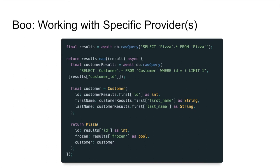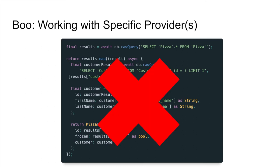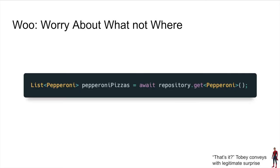Another thing that sucks: if you are working with specific providers — going back to the original example of deserializing from SQLite — what happens when we have to deserialize from Firebase? Or what happens when we have to deserialize from REST? It doesn't matter. BRIC handles all that just on its own.